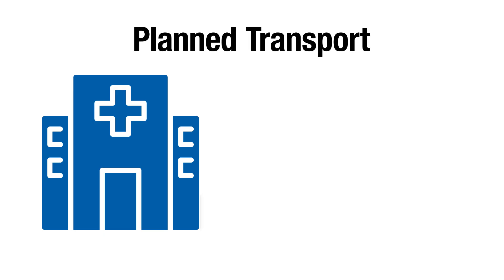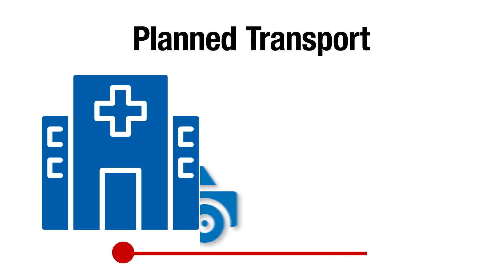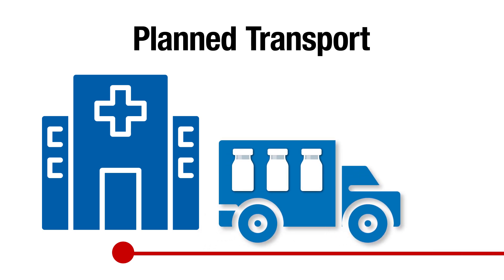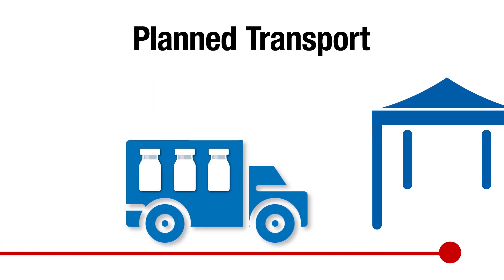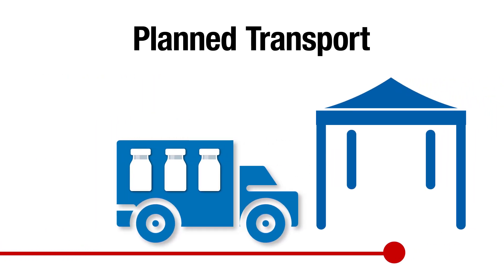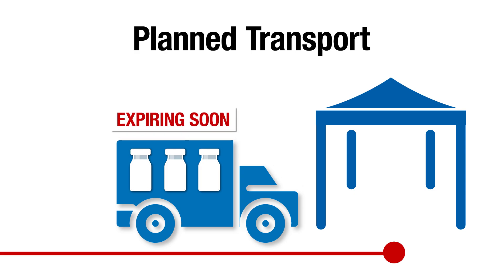To get started, planned transport refers to the redistribution of vaccines to satellite or off-site vaccination clinics. It also could refer to the movement of doses that are about to expire so they can be used where they are needed rather than wasted.